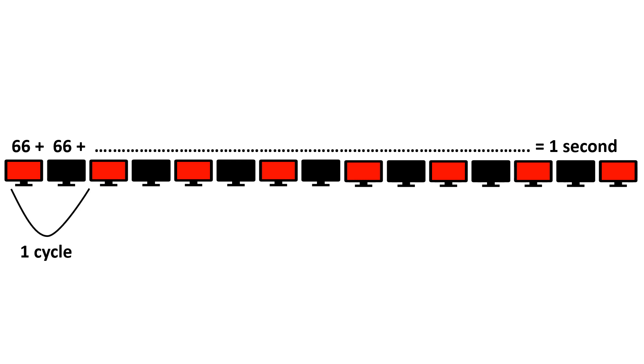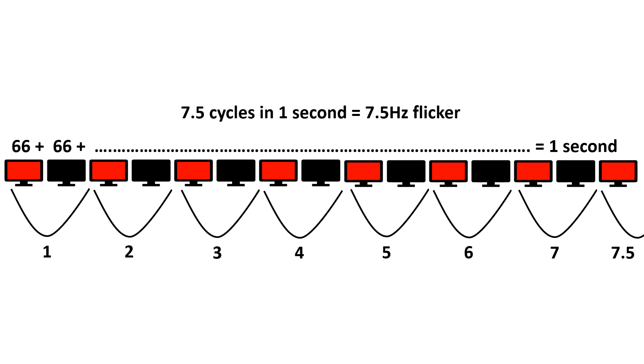The time between one red screen and the next is considered one cycle of the sequence, and you can count up the number of cycles in one second, which is 7.5. 7.5 cycles in one second is called a 7.5 hertz flicker.